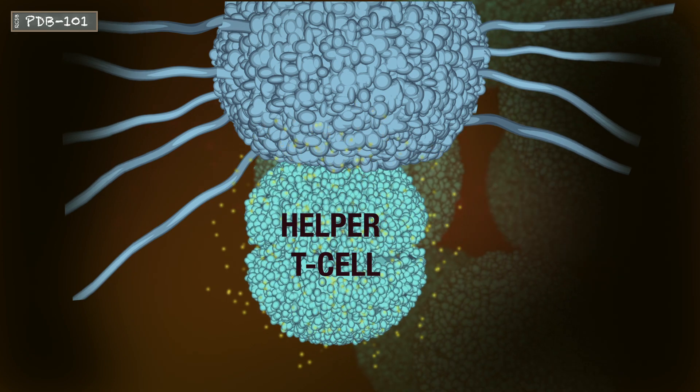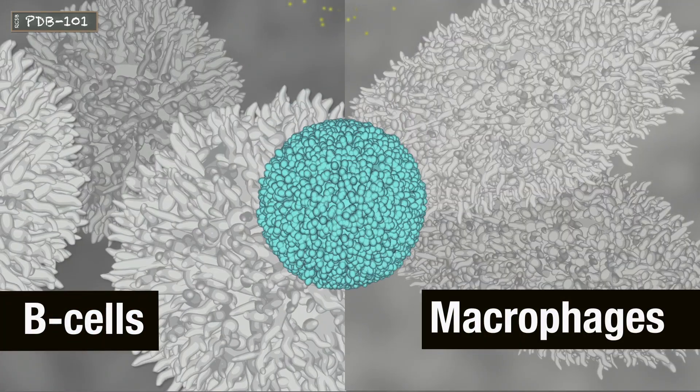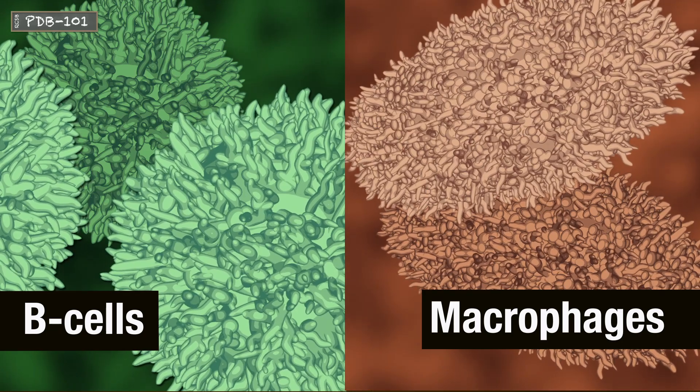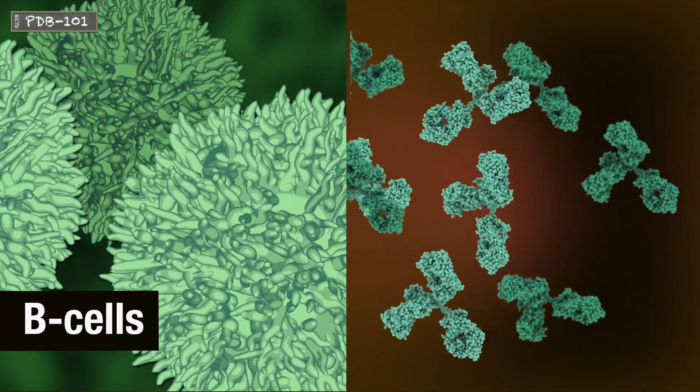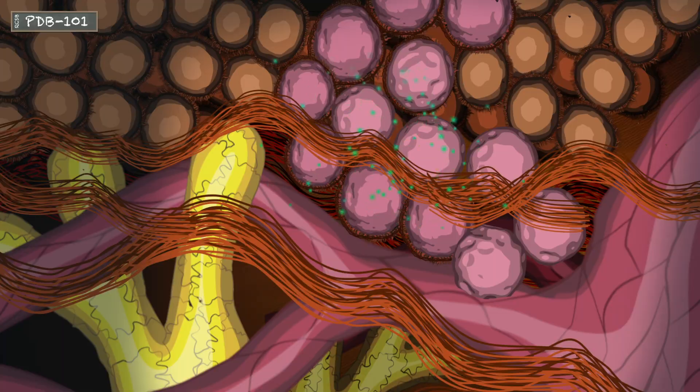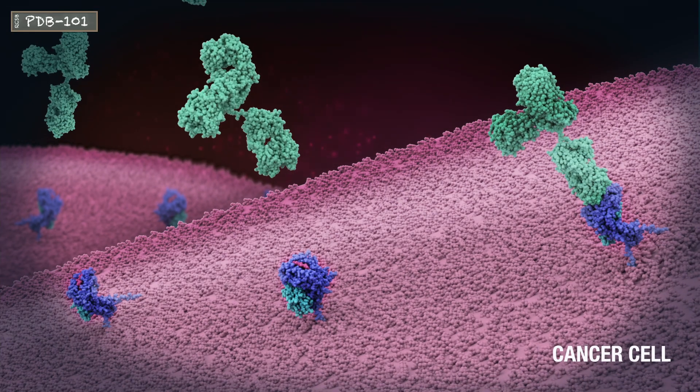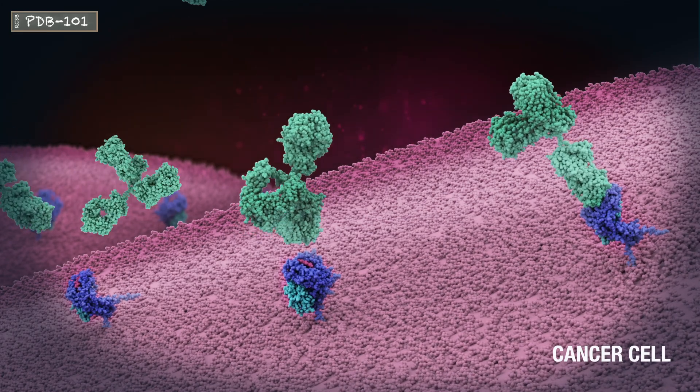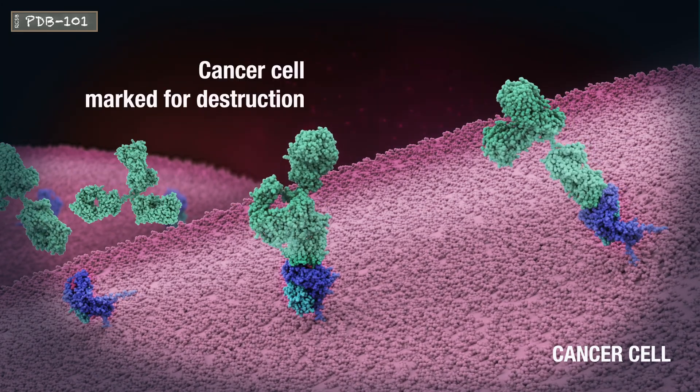Meanwhile, CD4, or helper T cells, perform the role of messengers, activating other immune cells such as macrophages and B cells. Some of these B cells produce antigen-specific antibodies, built to recognize the same antigen that the killer T cells are looking for. These antibodies greatly increase the scope and efficiency of the human immune response.